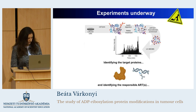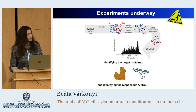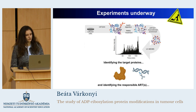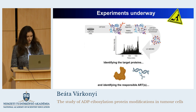Currently, we are working towards identifying the cytoplasmic ADP ribosylated proteins with high-resolution mass spectrometry, and we are trying to identify the ARTs, the enzymes that are responsible for these modifications, by inactivating the genes of ARTs one by one by the CRISPR-Cas9 method.